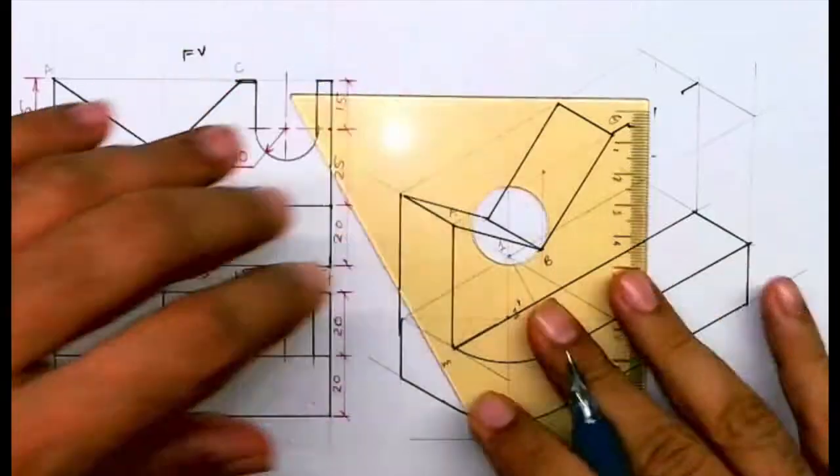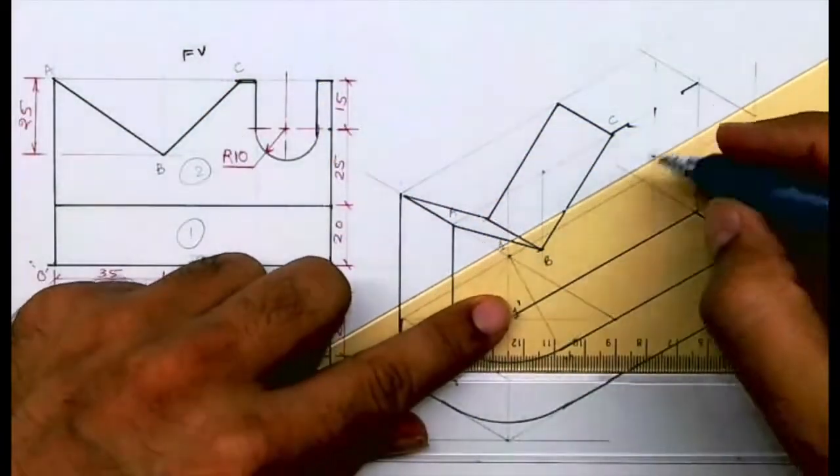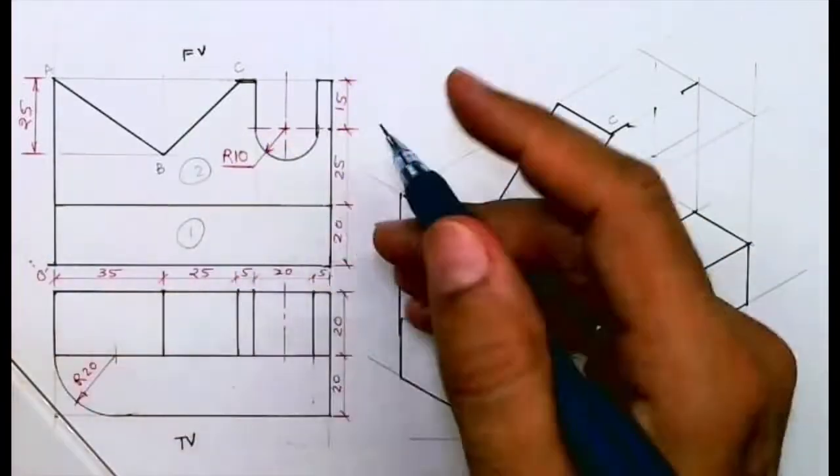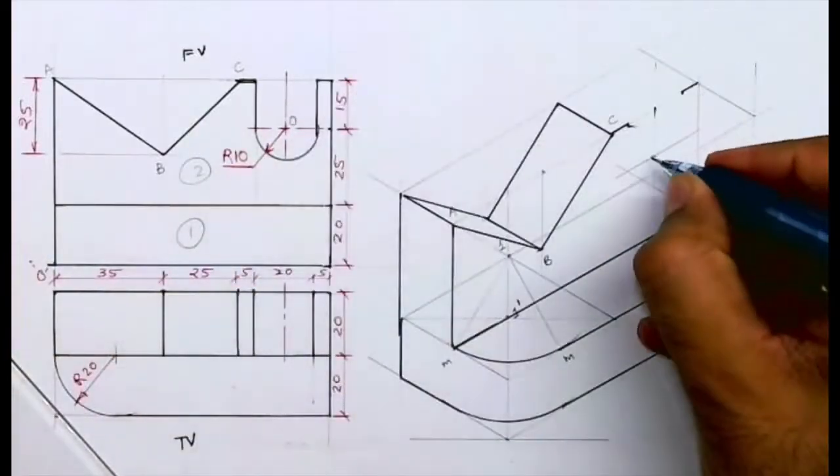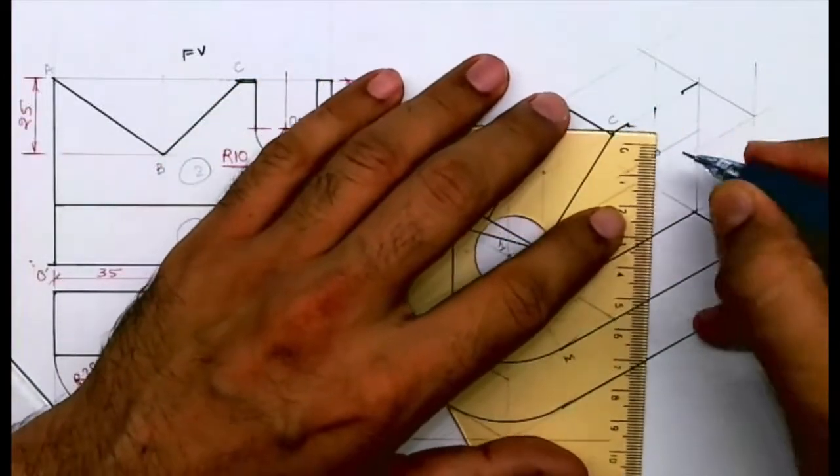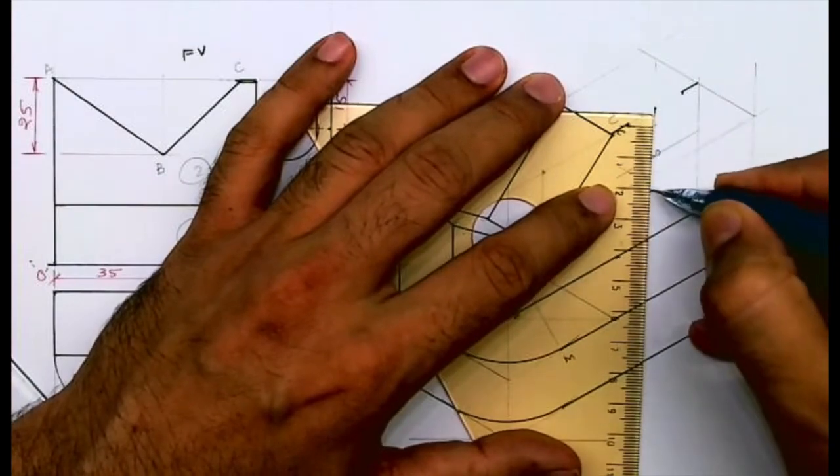When I go down by 15, I'll get the center of that circle, radius 10. I can mark that point as O and take 10 on all sides. From the center I'll go 10 up, 10 down, and I will draw using 4-center method.